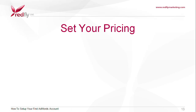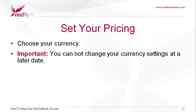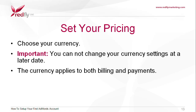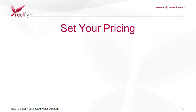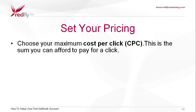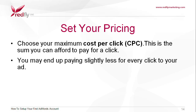Set your pricing. First you must choose your currency. But remember, you cannot change your currency settings at a later date, and the currency applies to both billing and payments. The next step is to choose your maximum cost per click. This is the sum you can afford to pay for a click. However, you may end up paying slightly less for every click to your ad because Google AdWords automatically optimizes your costs for you.